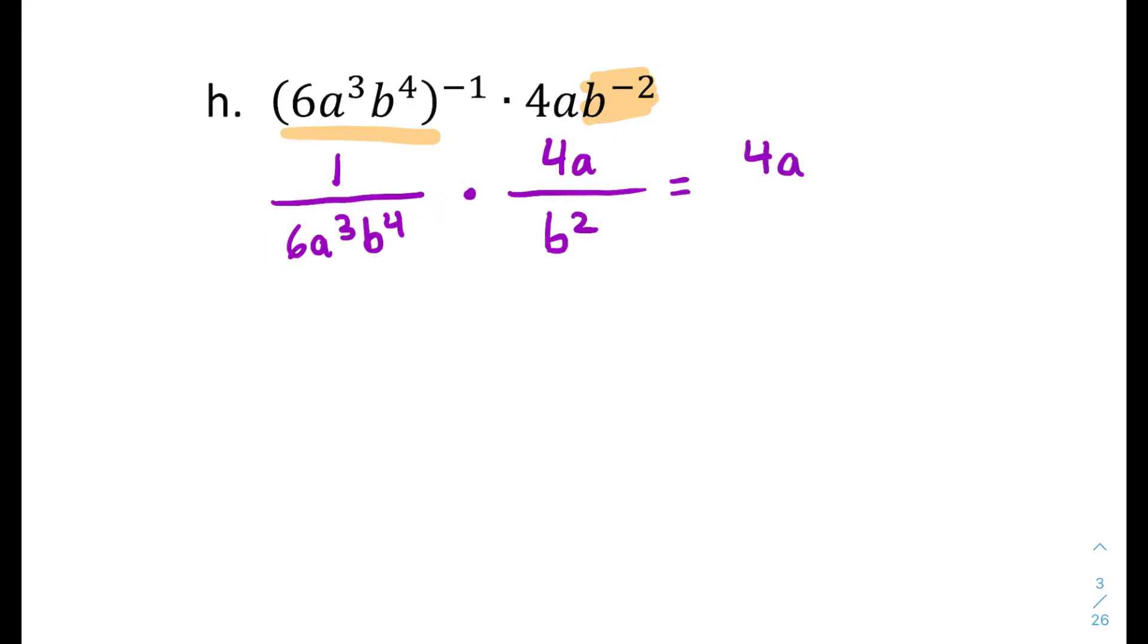Then I'm going to multiply straight across, which add your exponents on b. You get b to the sixth. And you can reduce 4 over 6 to 2 over 3. And divide out one common factor of a, leaves you with a squared on bottom.